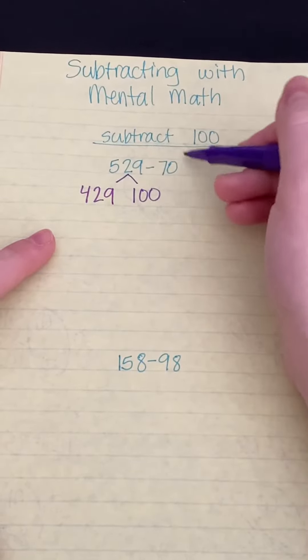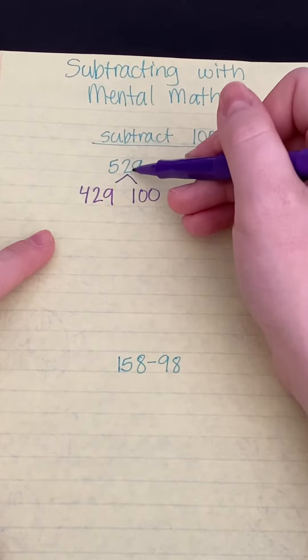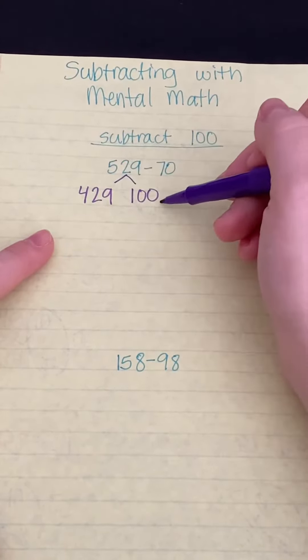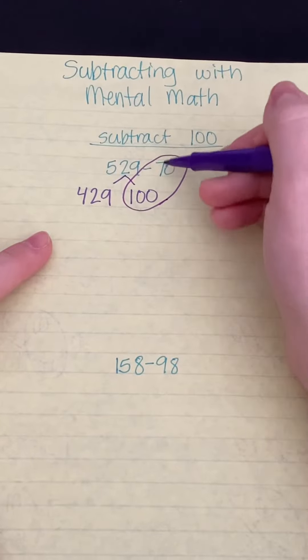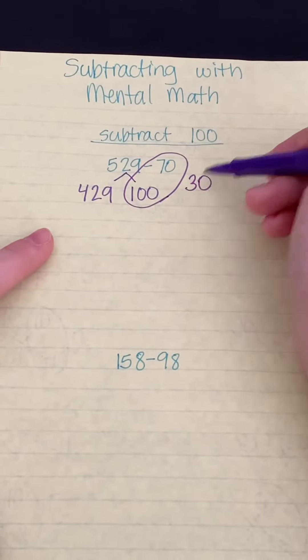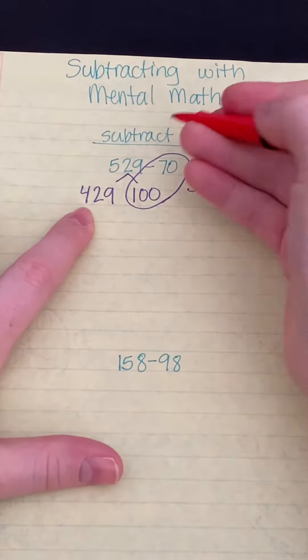That way I can subtract 70 from my whole because I couldn't do that originally because I didn't have enough tens. So 100 minus 70 is 30, and then I can go back and put my number